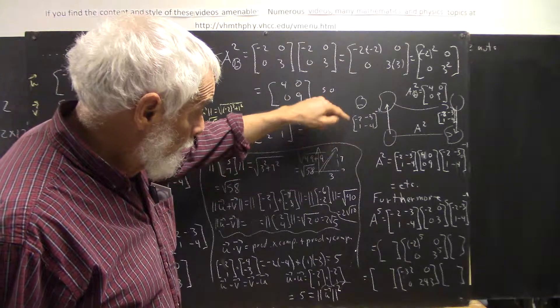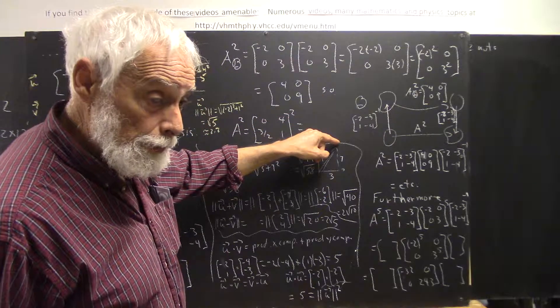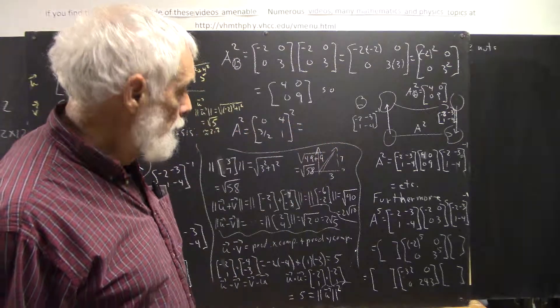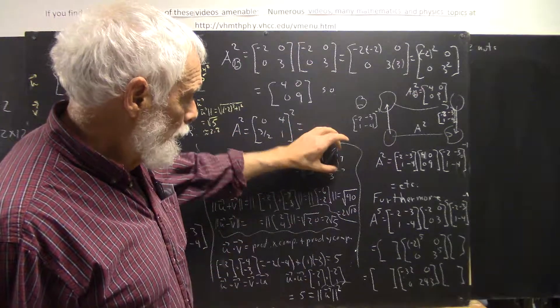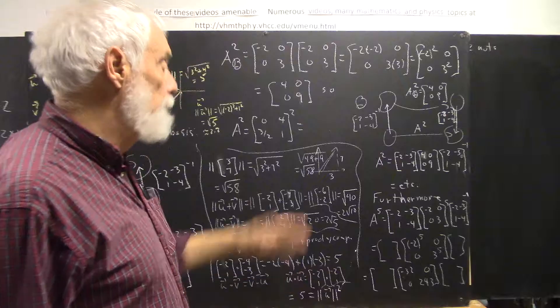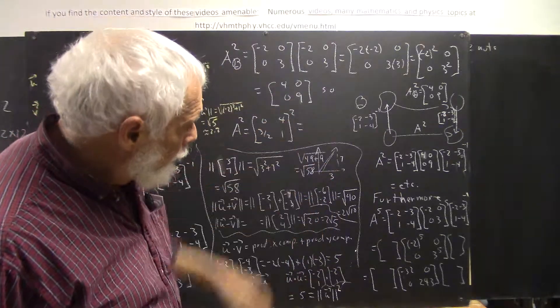That's three units this way and seven units this way. I didn't do a very good job of drawing that to scale—the seven looks not much bigger than the three—but you understand that the Pythagorean theorem tells us that the length of this vector is the square of this number and this number, since this has to be a right angle.